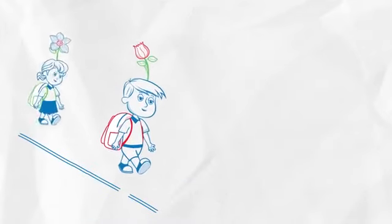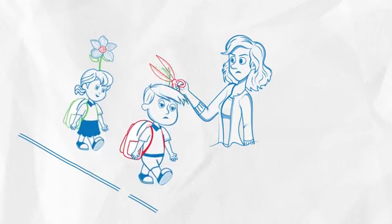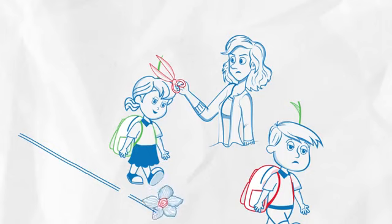Before children start going to school, every child is unique. Every child thinks different. But the education system makes every child think the same. This is the fundamental flaw in the education system.